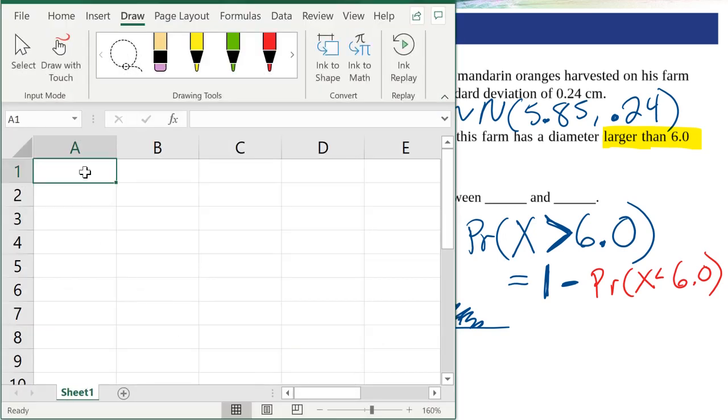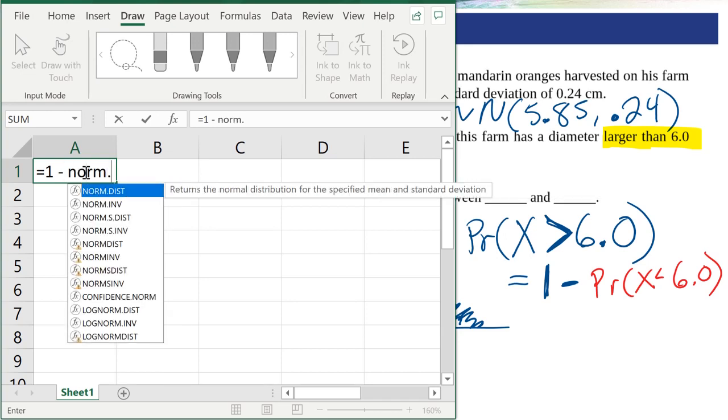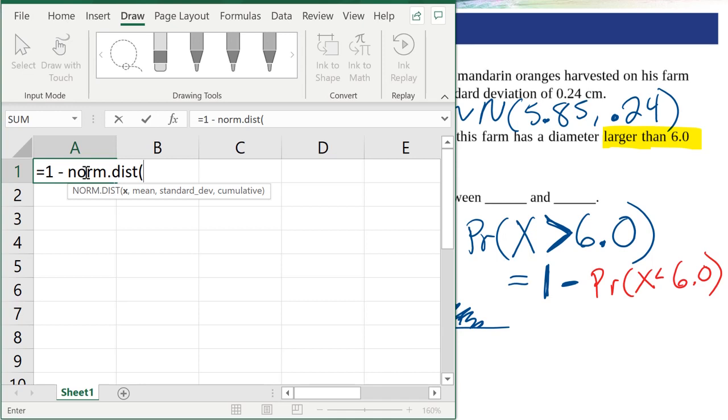I'm going to click in one of the cells. I'll press the equal sign. Then I'll say 1 minus, because I want 1 minus the probability that X is less than 6.0. And then I'll do norm.dist, normal distribution.